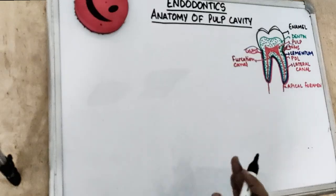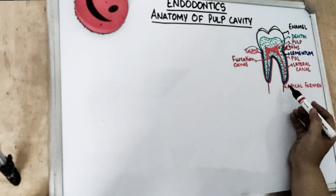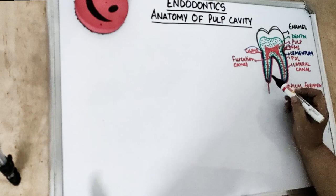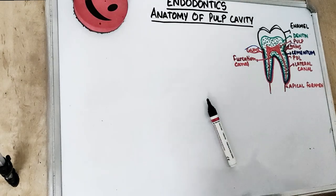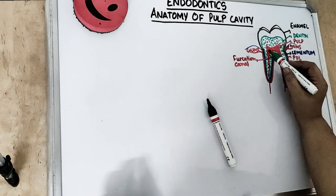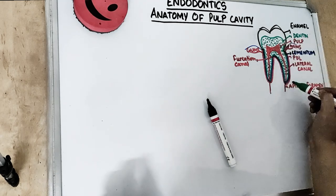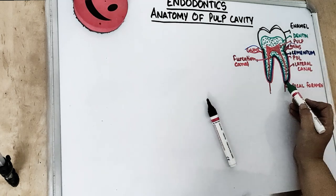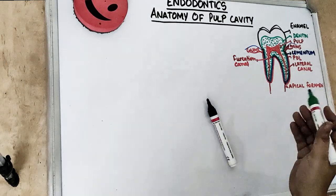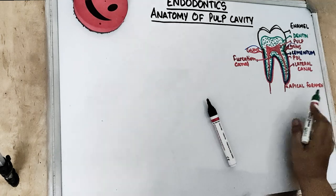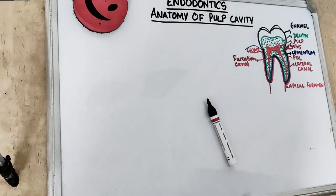The pulp is actually surrounded by dentine all over except the apical foramina part. The green dotted part is our dentine, and as you can see, this green part — the dentine — surrounds the red part, which is the pulp, except at the apical foramina part. The pulp cavity is the internal space enclosed by the dentine except at the apical foramen.